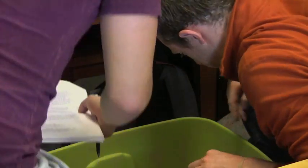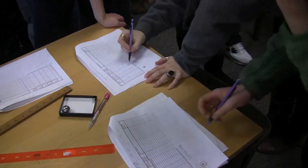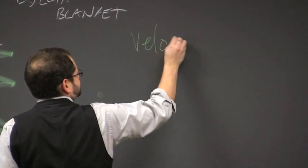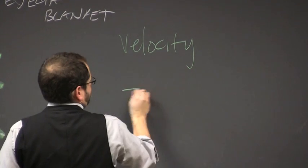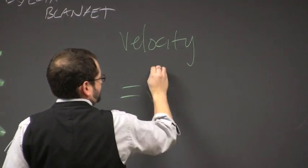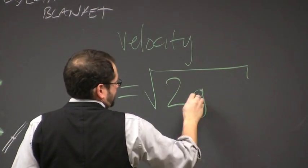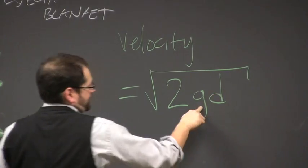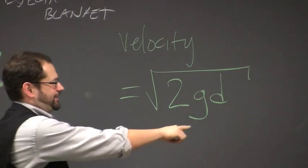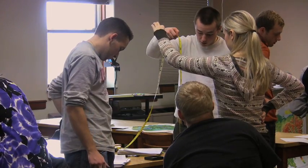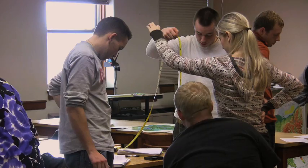You can calculate how fast these things are going just based on the distance you drop it and gravity. Your velocity is equal to the square root of 2 times the force of gravity times d, where d is the distance — how far you dropped the bolide.